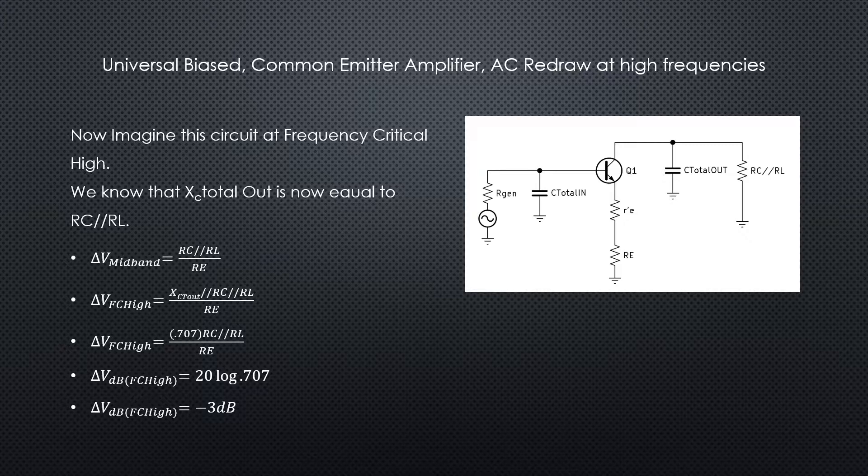Now if we come back to where we are and we're looking at the circuit in terms of high frequency cutoff, we need to factor in the x sub c total at that frequency. We know that at cutoff, x sub c should be equal to that resistance rc in parallel with rl.